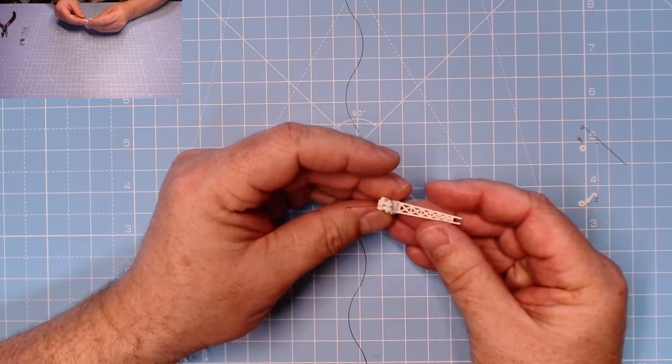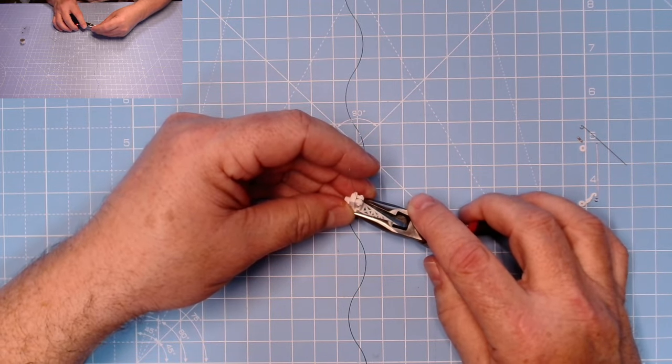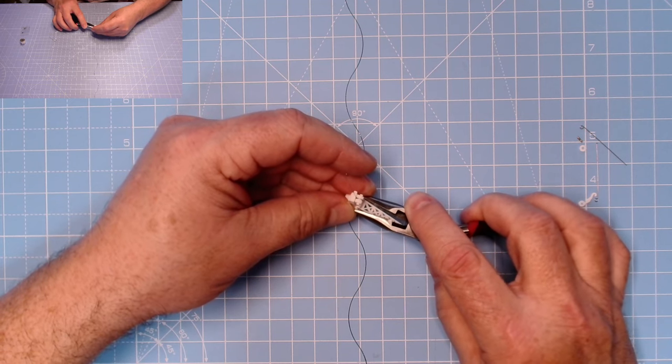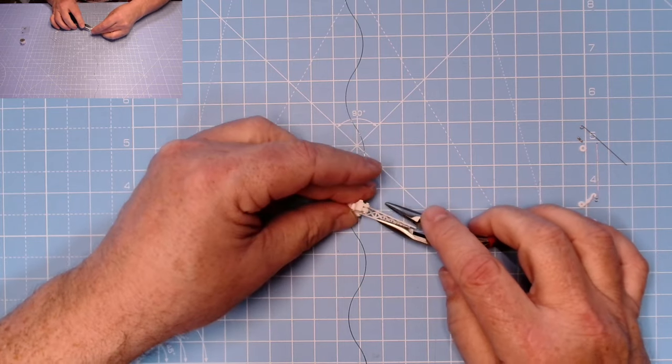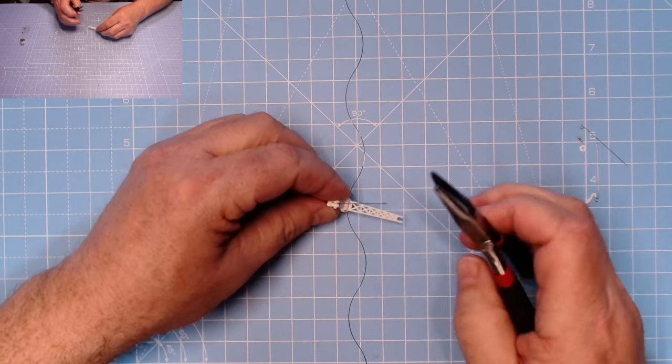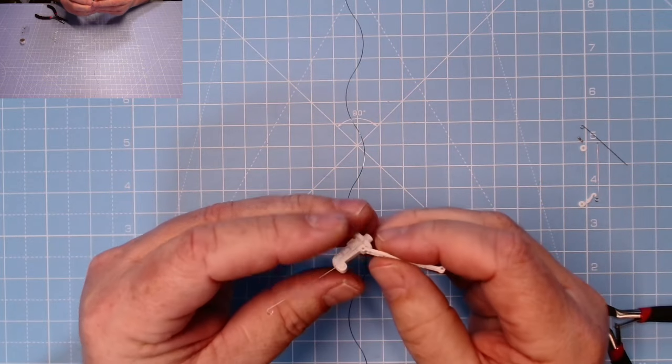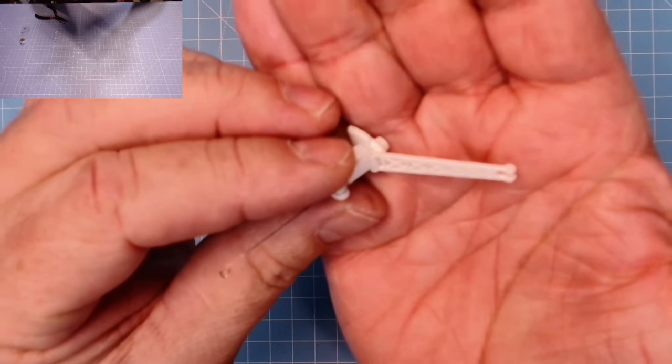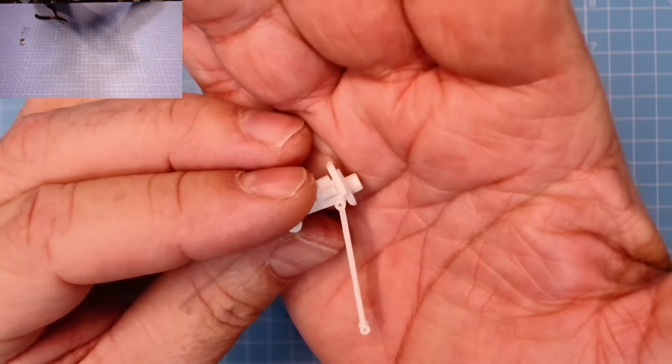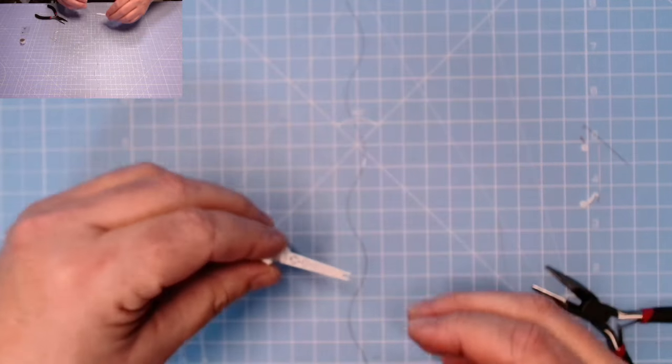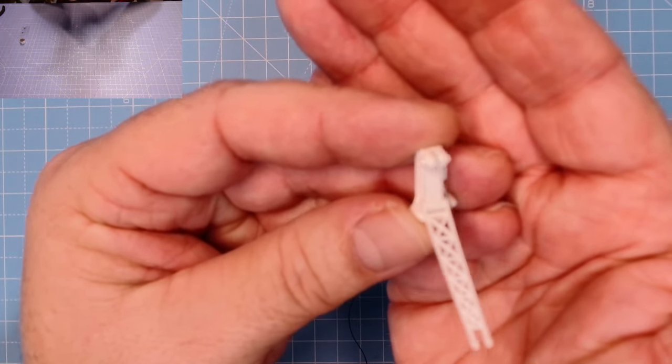It can go just there like that. Move that out to the right, pop that there, and we can see we can push that all the way through. Get the pliers on it, ever so gently. Now it's gone through. There we go, got it. That was fiddly.